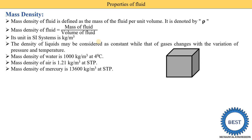The density of a liquid may be considered constant, while the density of a gas changes with variation of pressure and temperature. If the temperature and pressure of a gas change, its density changes. For liquids, we consider density to remain constant. The mass density equation is mass of fluid divided by volume of fluid, with unit kg per meter cube.